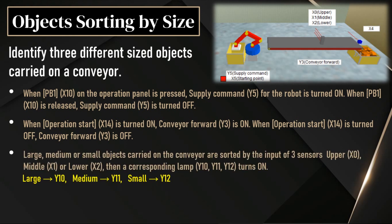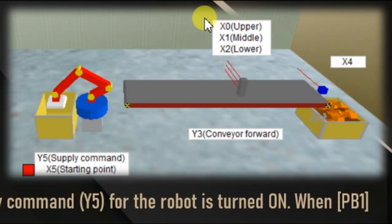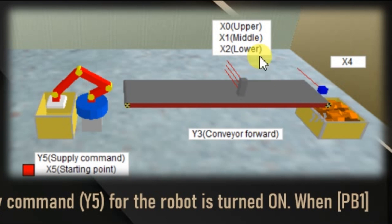We have three sizes of boxes: large, medium, and small. There are three sensors — X0, X1, X2 — upper sensor, middle sensor, and lower sensor. These are installed vertically. With the help of these sensors, we have to identify the size of the box.